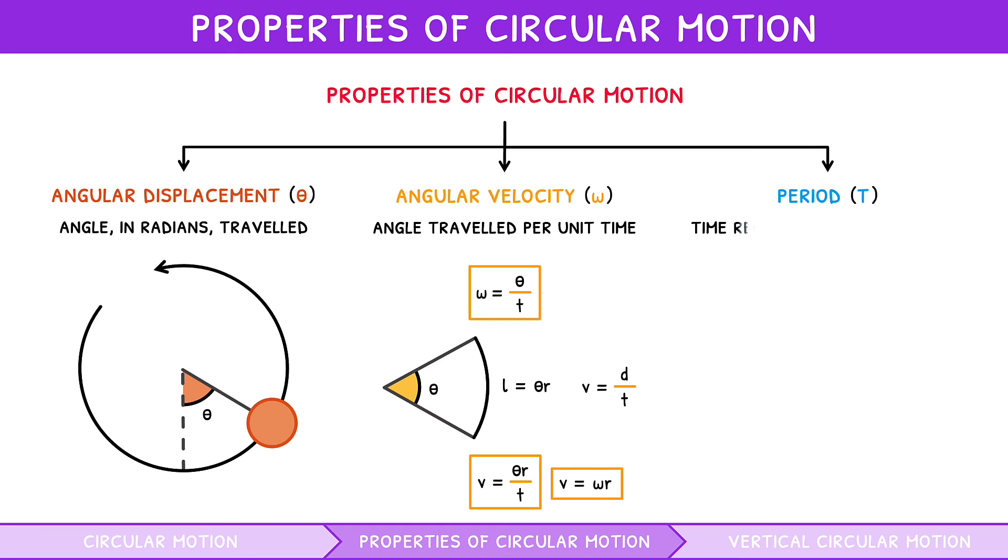Period is the time required to complete one rotation. Using the formula for angular velocity, we can say the angular velocity for one rotation is given by angular velocity equals 2π divided by period. Thus, we can rearrange to find period, which is therefore given by period equals 2π divided by angular velocity. Make sure to remember these formulas, as they are not all in your data booklet.